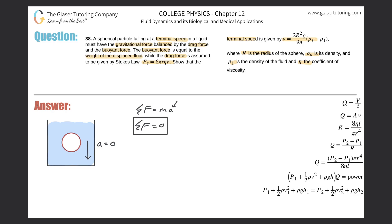The problem tells us about three forces: gravitational force, drag force, and buoyant force. Gravitational force points downward — that's F_g. The buoyant force opposes gravity and points upward — F_b. The drag force also points upward — F_d. So our force balance equation is: F_b + F_d − F_g = 0.